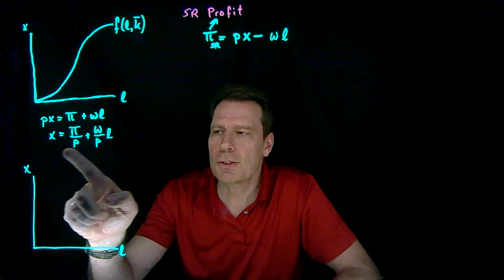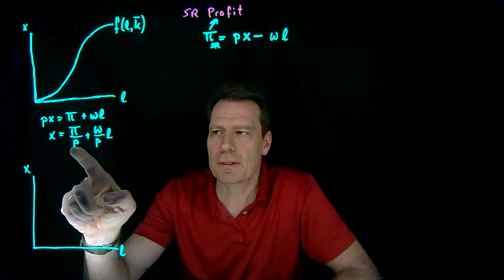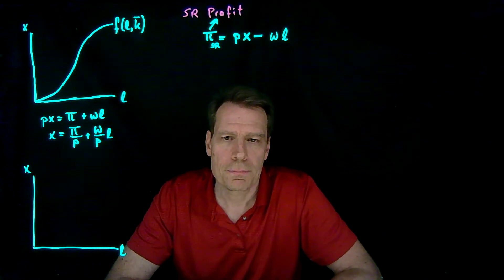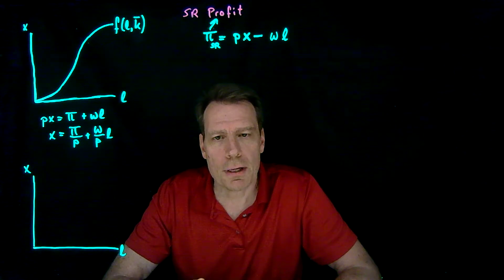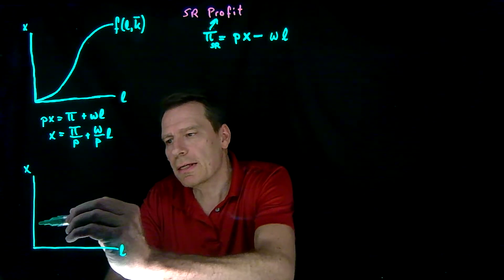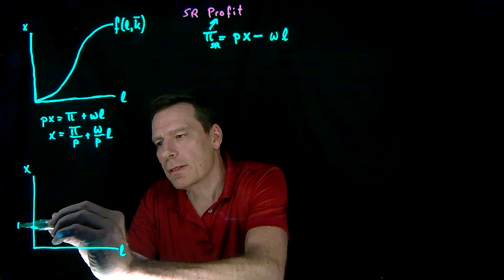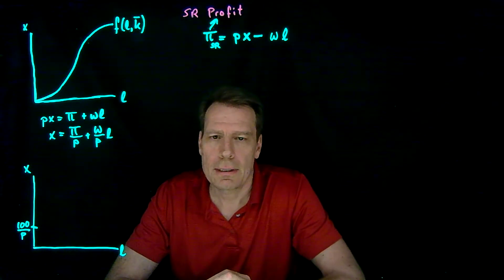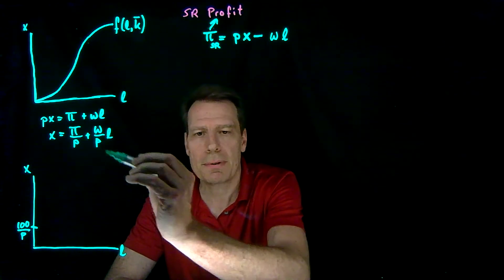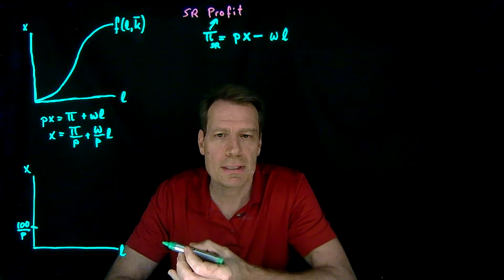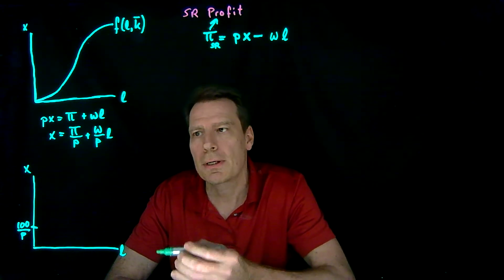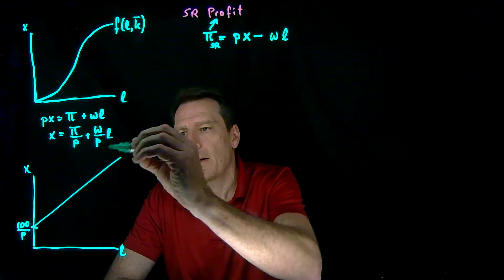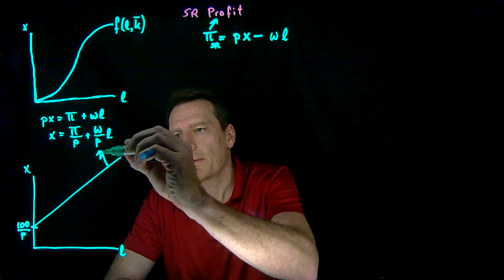So now we have the equation of a line with intercept profit divided by price and slope w over p. If profit's $100, for example, we would have an intercept of 100 divided by the price and a slope of w over p. Both w, the wage, and p, the output price, are positive, so we'd have a positive slope of w divided by p.